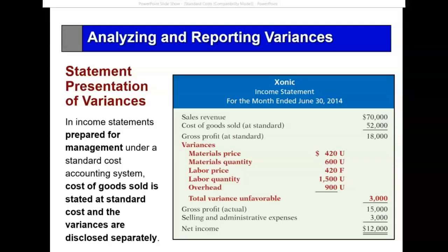The variances — material quantity variance $600 unfavorable, labor, and so on — give a $3,000 unfavorable total variance. Therefore, we adjust the cost of goods sold to arrive at the actual gross profit of $15,000, which then flows through to the income statement.